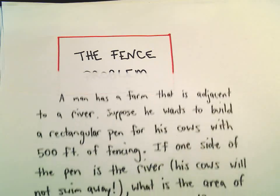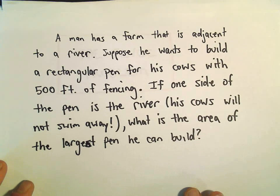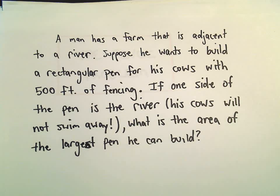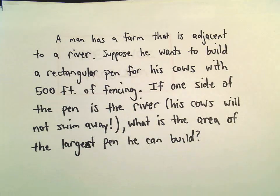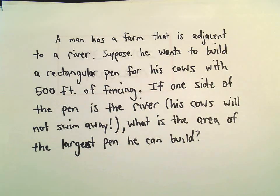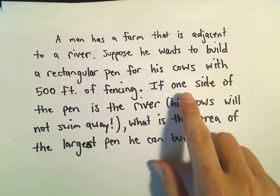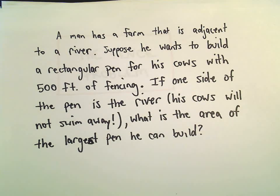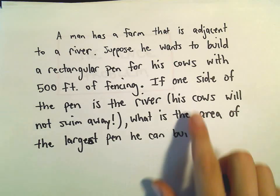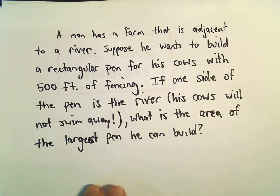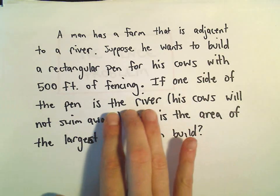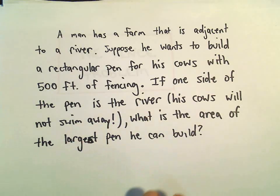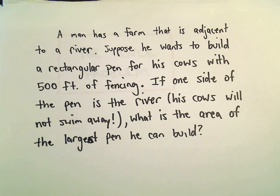Okay, here we're going to do another little optimization problem. Suppose a man has a farm that's adjacent to a river, and he wants to build a rectangular pen for his cows, and he has 500 feet of fencing. So if one side of the pen is the river, maybe his little farm has the river next to it or going through it. The idea is his cows are not going to swim away, so the river is kind of functioning like part of the fence. We want to know, what's the area of the largest pen that he can build?